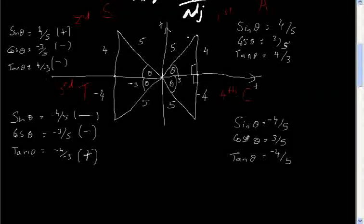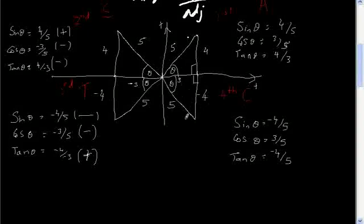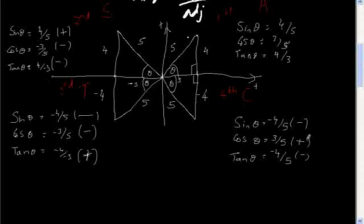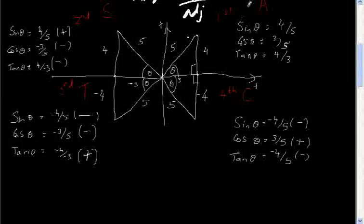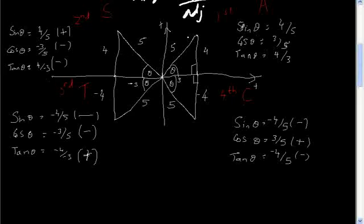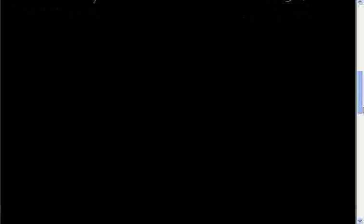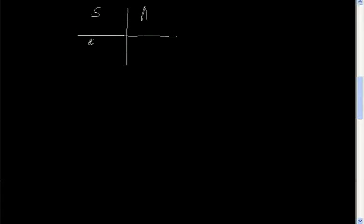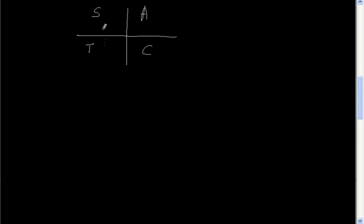I've gone ahead and done the fourth quadrant ratios as well. I drew the same triangle in the fourth quadrant. This time, going down is negative, but going to the right is positive. That results in only cos having a positive ratio, while the other two are negative — so in the fourth quadrant you put a C. To summarize: in the first quadrant, all trigonometric functions are positive; in the second, only sine is positive; in the third, only tan; and in the fourth, only cos.